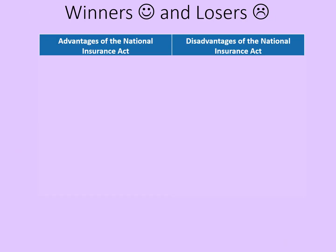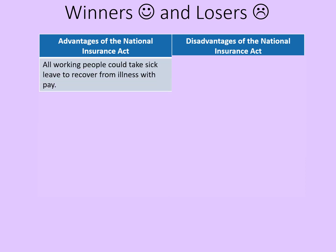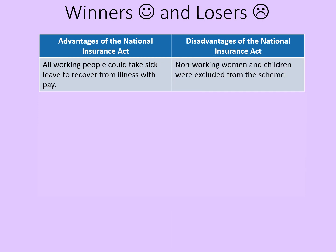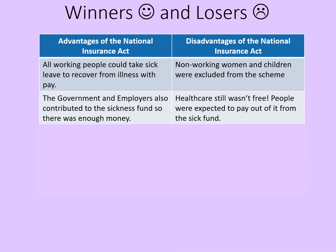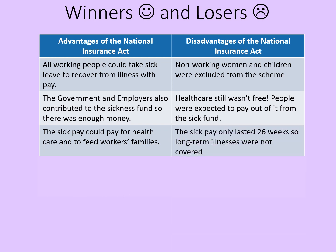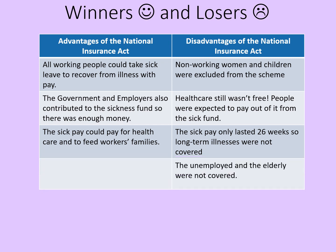Who were the winners and losers of the National Insurance Act? Advantages included that all people who could take sick leave could recover from illness with some pay. But non-working women and children were excluded from the scheme. The government and employers also contributed to the sickness fund, so there was enough money. However, healthcare itself still wasn't free — people were expected to pay for that out of their sick pay. The sick pay only lasted 26 weeks, so long-term illnesses were not covered after this point. Another disadvantage was that the unemployed and elderly were not covered. So don't think that this is like the NHS — it's maybe the very start of the idea that we all pay a little bit so that we can get healthcare if we need it, but it's not the same thing.